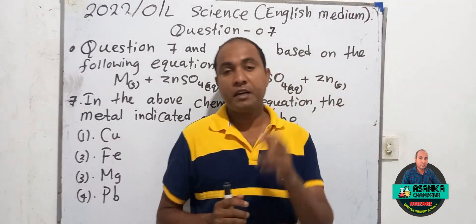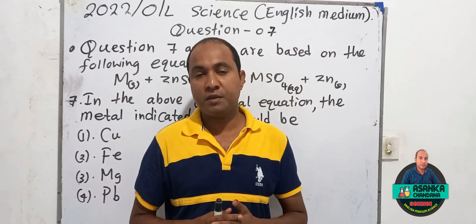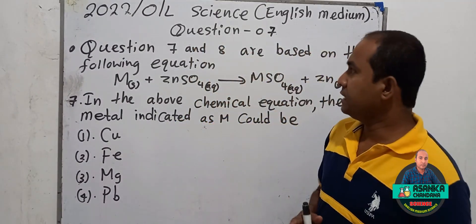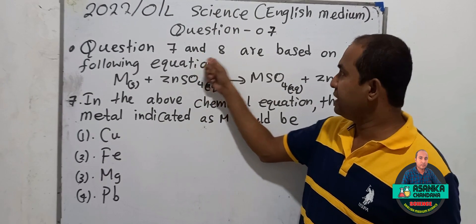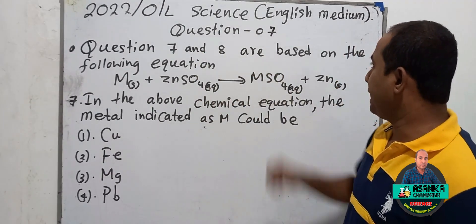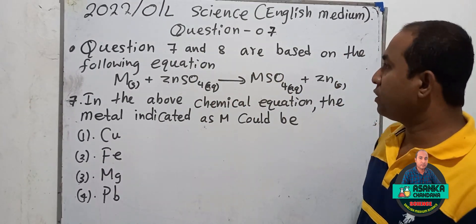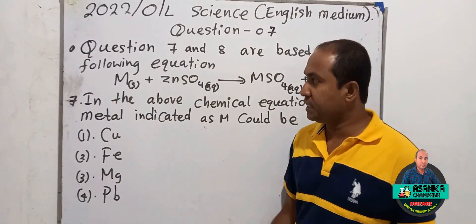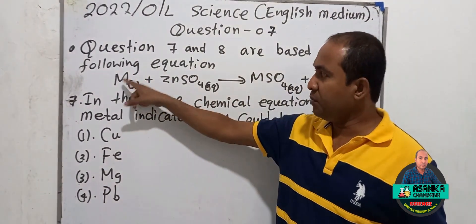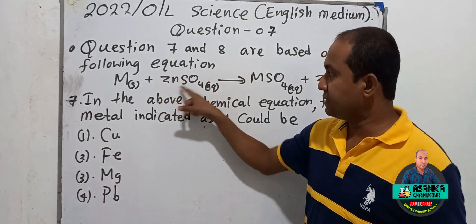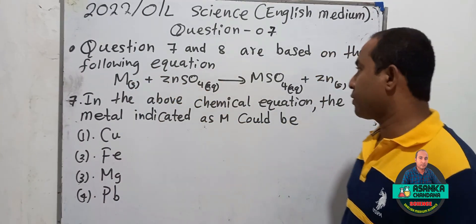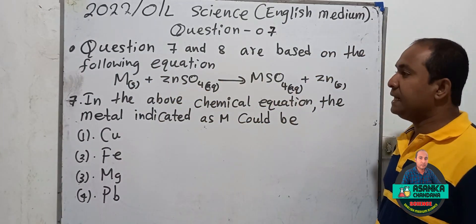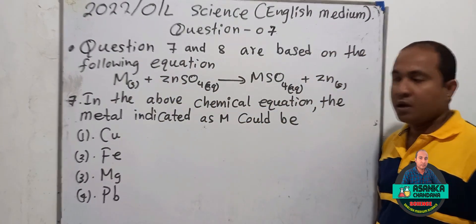Now we are going to take the answer for question number 7. There is a question number 7 and question number 8 based on the following equation. The equation is: M reacts with zinc sulfate to produce M sulfate and zinc.